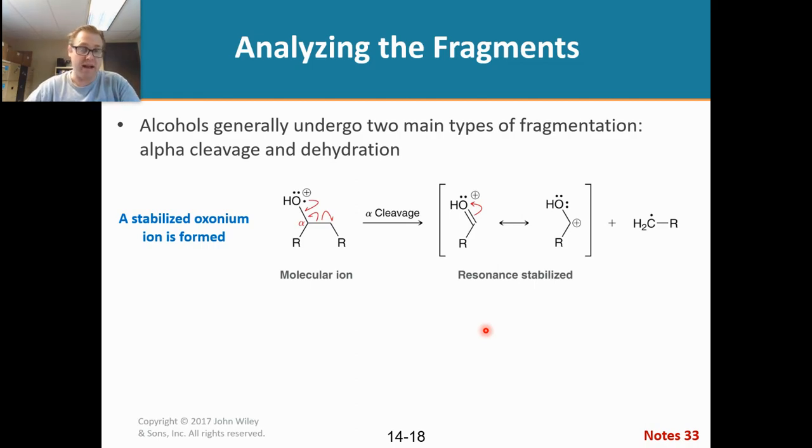Now there's two types of fragmentation that we want to talk about. Now, the first one is called alpha cleavage. And then the other one is called dehydration. So let's focus our attention on alpha cleavage first. Now the alpha carbon, that's what the alpha is referring to here. The alpha carbon is the carbon that is directly attached to the oxygen atom. That is alpha. We call it alpha cleavage because we are going to be breaking this bond right there.